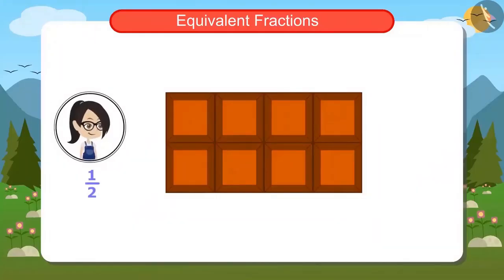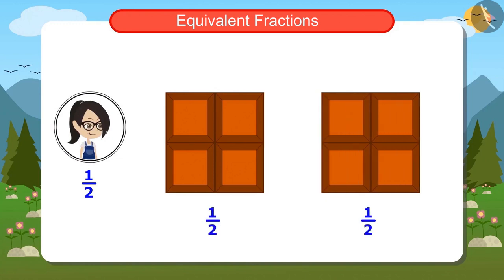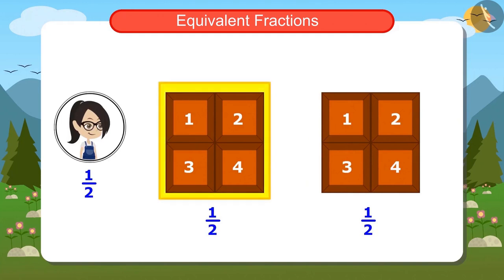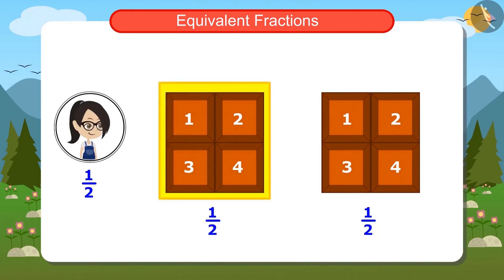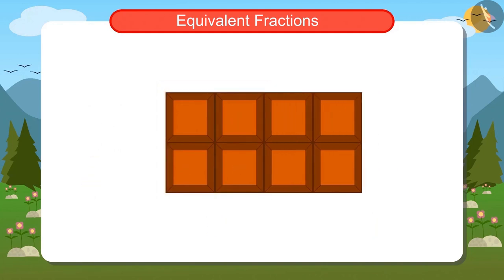Aunty said that you will take one half of it. One half means one of two equal parts of the chocolate. By dividing this chocolate into two equal parts, you will get four pieces in each part. And you will get one part — that is, you will get four pieces of this chocolate.